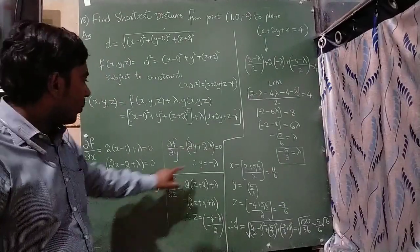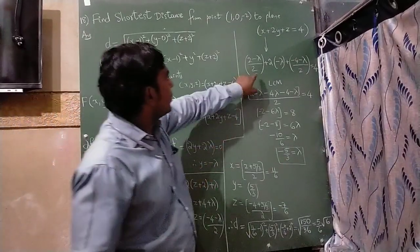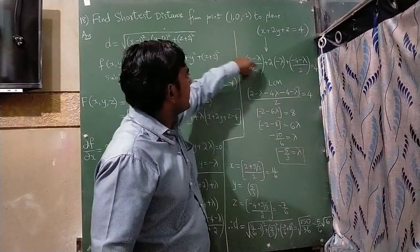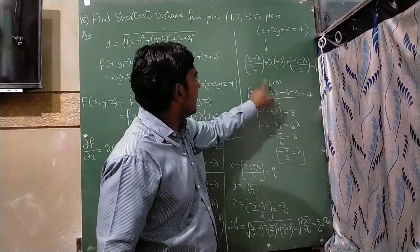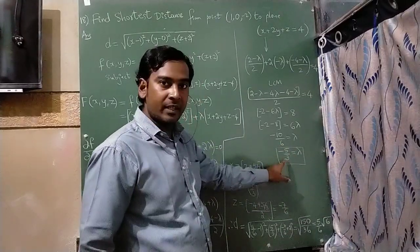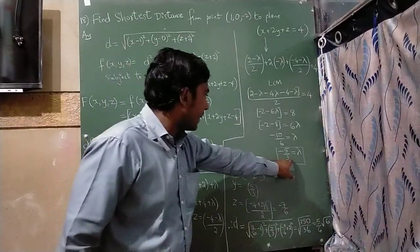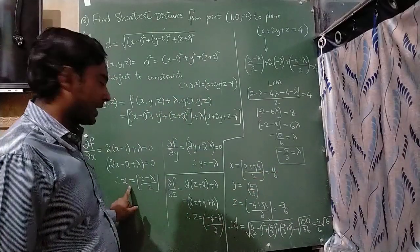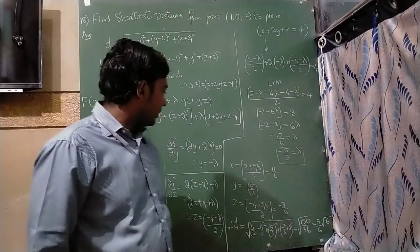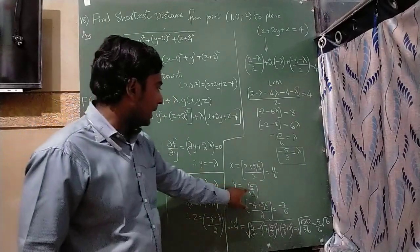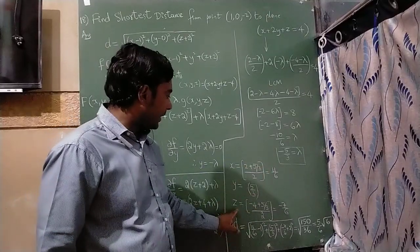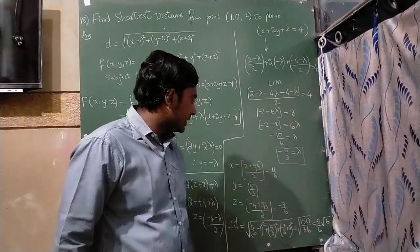Substituting the expressions for x, y, and z into the constraint equation and taking LCM gives λ = -5/3. Substituting this lambda back: x = 11/6, y = 5/3, and z = -7/6.